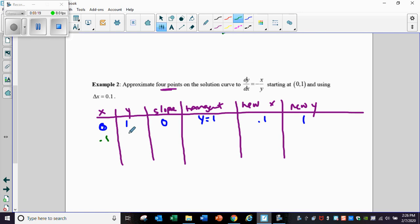Bring down that point to get (0.1, 1). The slope is negative 0.1 over 1, which is negative 0.1. There is a negative there, of course. The tangent line is y equals negative 0.1 times (x minus 0.1) plus 1. So I just used point-slope form of my line.